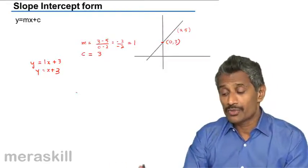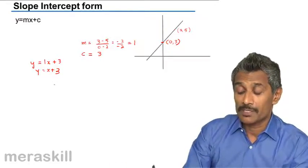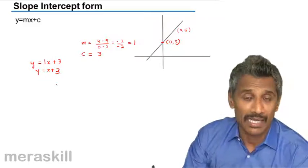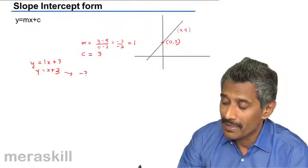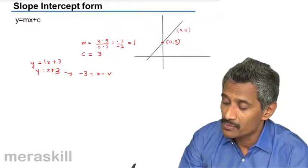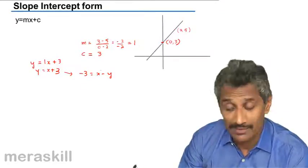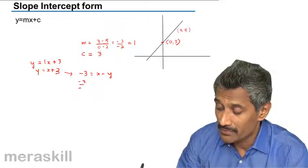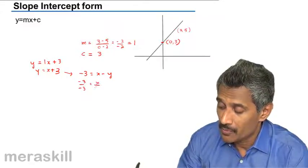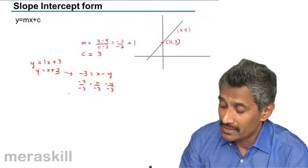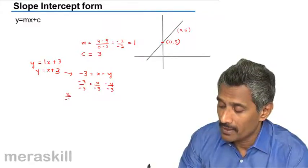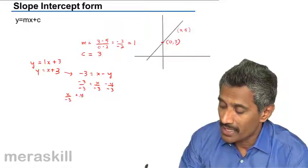Now suppose I want to make the same line in two-intercept form. I would write it as, in two-intercept form, it would be minus 3 is equal to x minus y. We can divide throughout by minus 3. We get x upon minus 3 minus y upon minus 3, and the equation would become x upon minus 3 plus y upon 3.